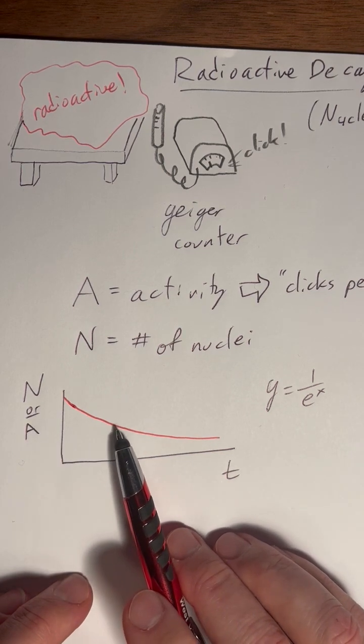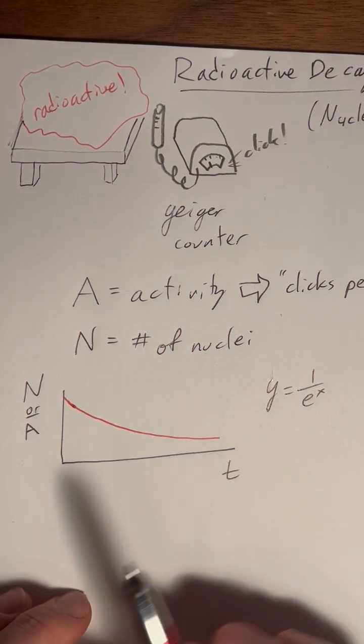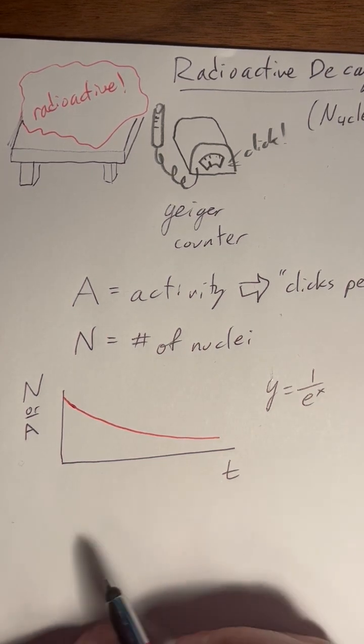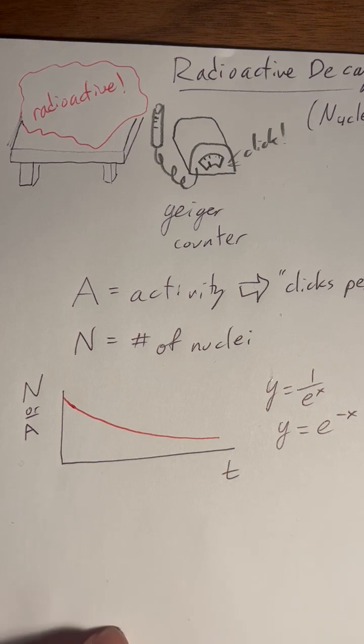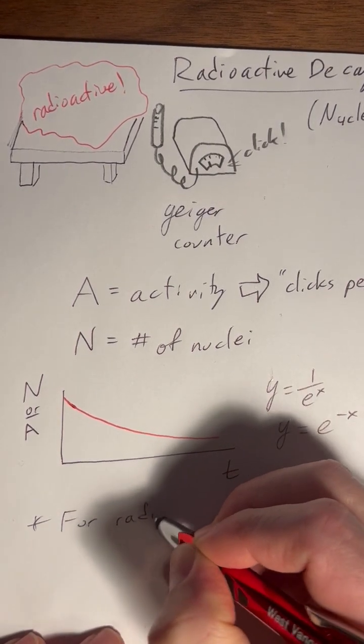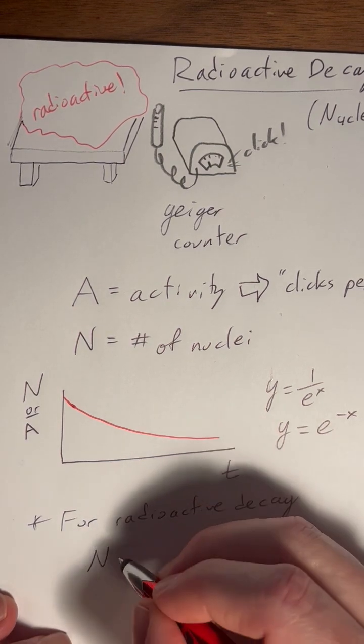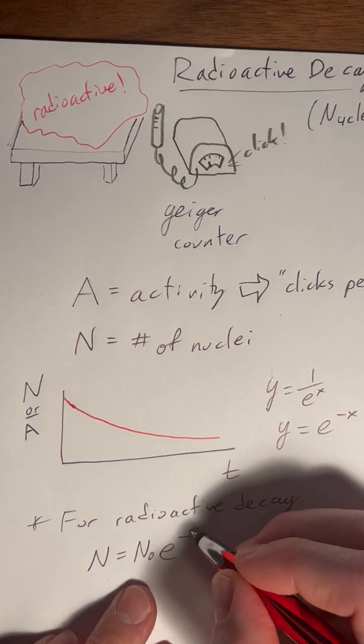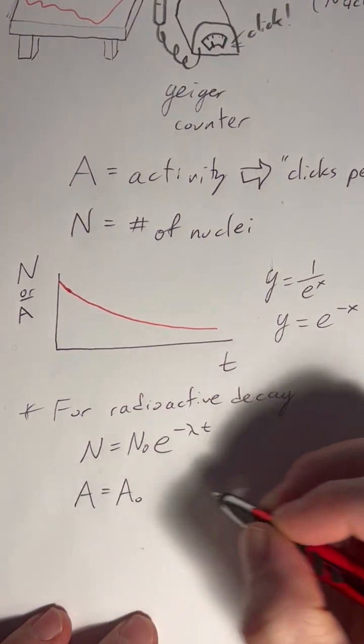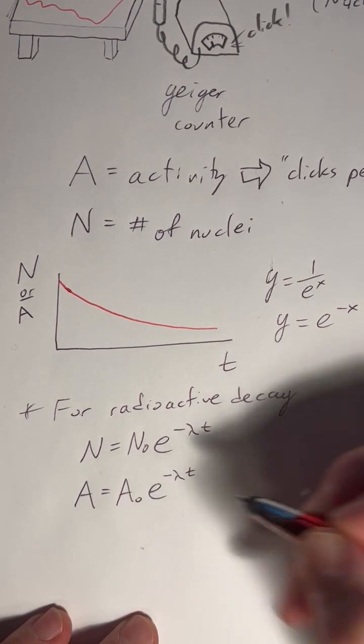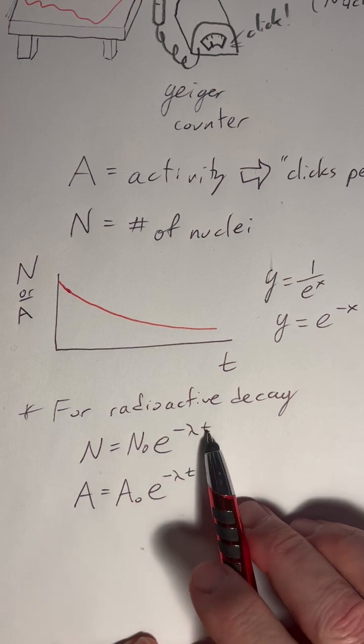Now, of course, different samples are not going to have the same rate of decay, right? And so we have to kind of change our y and our e axes. So this is the same as y equals e to the negative x, of course. So for radioactive decay, we change this simple relationship into N equals N naught times e to the negative lambda t. Or our activity is equal to the original activity times e to the negative lambda t. So you get what t is. t is time. So we've changed the x into time. Instead of negative x, it's negative lambda t. But what's this lambda?